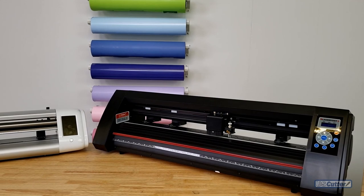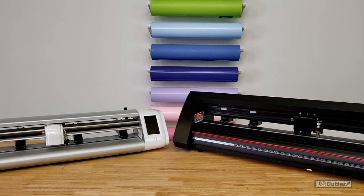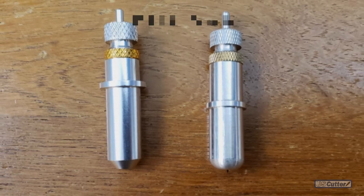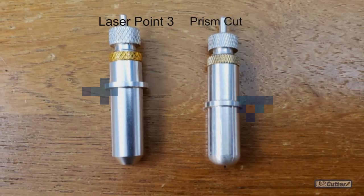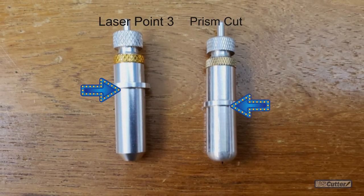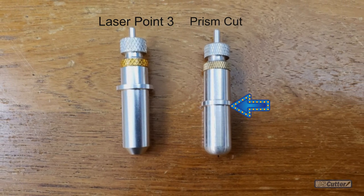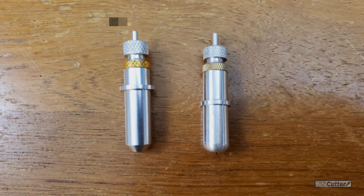Blade holders on the other hand are another story. Each blade holder is unique to its type of cutter. Let's take a look at these Laser Point 3 and Prism Cut blade holders when compared to each other. This part right here on the blade holder is what the cutter uses to lock it in place in the cutter arm. You can see from that point that this one is much shorter than the other, so it wouldn't work in the other.